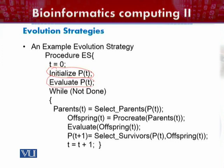After initializing the parental population, the program evaluates the fitness of these individuals on the basis of some evaluation or fitness measures. After evaluation, parent selection is applied, then mutation is applied, and then selection is applied. The algorithm runs iteratively and these steps repeat in a while loop as long as the termination criteria is not satisfied.